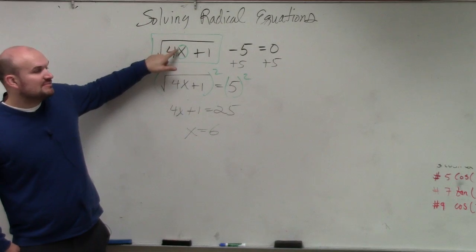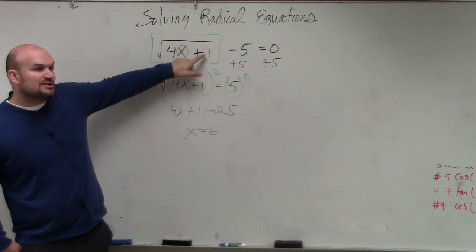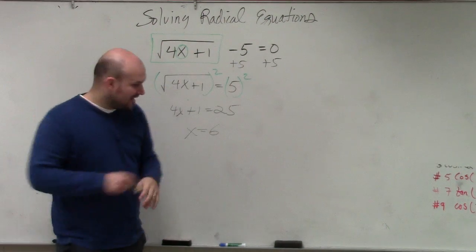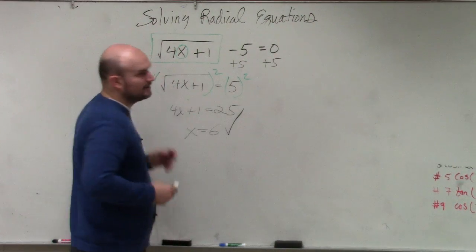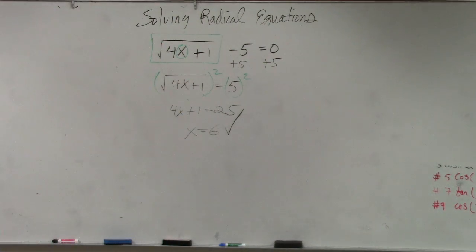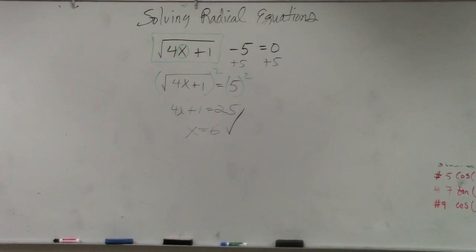Plug a 6 in here. 4 times 6 is 24, 24 plus 1 is 25, square root of 25 is 5, 5 minus 5 is 0. Answer works. I'll put a check mark in there to show that I have verified it and checked it. If you don't put a check mark in there...